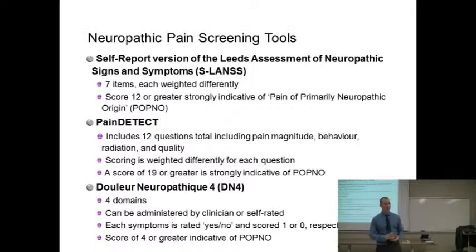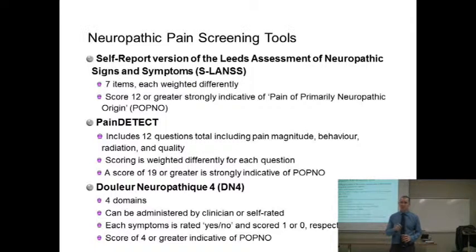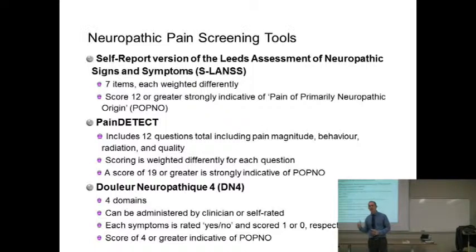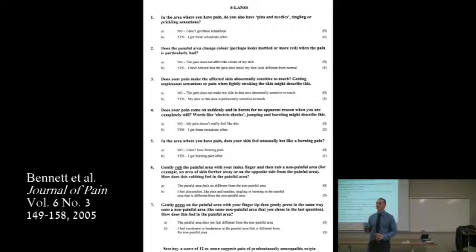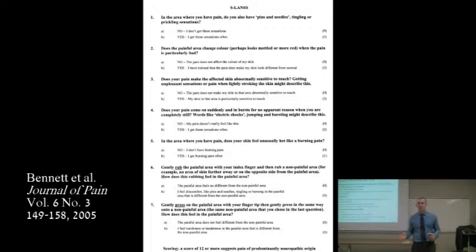You can assume there is also a non-self-report version, which there is. There was originally just a LANS — Leeds Assessment of Neuropathic Signs and Symptoms — and this is the self-report version. The nice thing about this scale is they're all just yes-no questions. Patients don't have to calibrate anything — just yes, I feel this, or no, I don't. Seven questions. It takes about a minute to do.